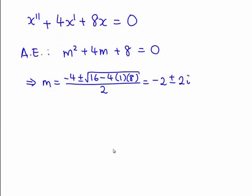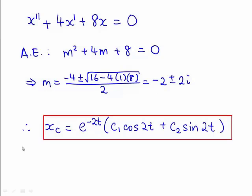Now, if we look at the associated homogeneous differential equation given by x double prime plus 4x prime plus 8x equals to zero, we can write down the auxiliary equation which is m square plus 4m plus 8 equals to zero, and easily work out the roots of this equation. In this case, we found that the roots of the equation are negative 2 plus 2i and negative 2 minus 2i. In other words, the alpha is negative 2 and beta is 2. So we can write down the complementary function as xc equals to e to the negative 2t into c1 cos 2t plus c2 sin 2t.